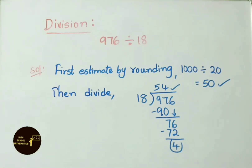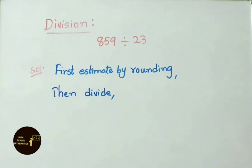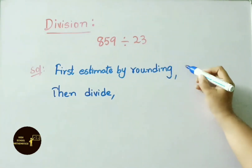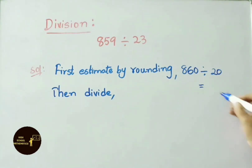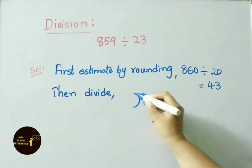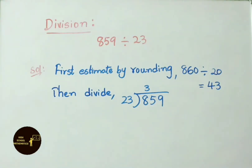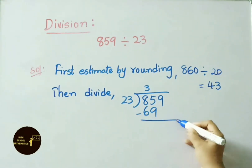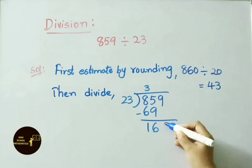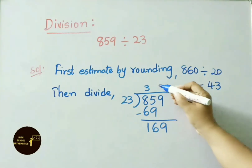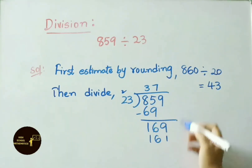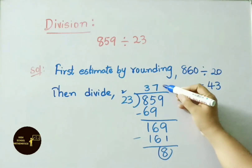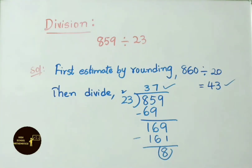Another division example: 859 divided by 23. Estimate by rounding: nearest 100 for 859 is 860, nearest 10 for 23 is 20. Dividing gives estimated value 43. Actual division: 23 threes are 69; 85 minus 69 is 16, bring down 9 to get 169; 23 sevens — 7 threes are 21 carry 2, 7 twos are 14 plus 2 is 16, so 23 sevens are 161; remainder is 8. Actual quotient is 37, and estimated value is 43, which are closer.